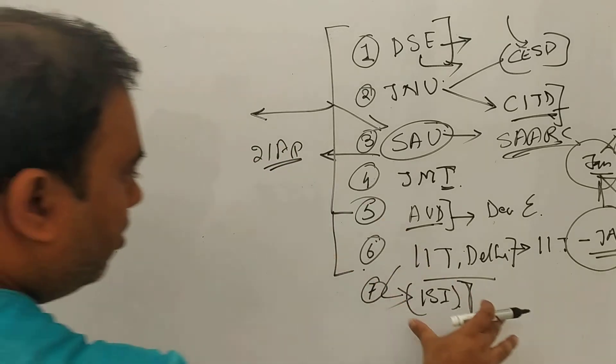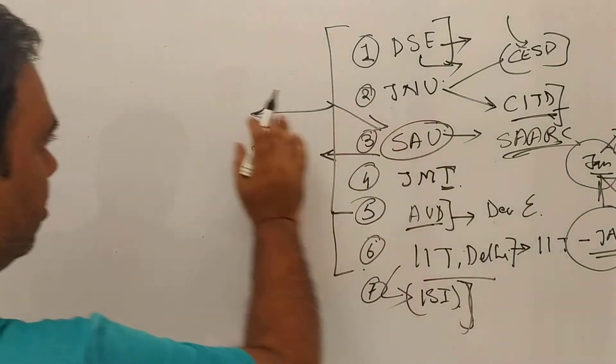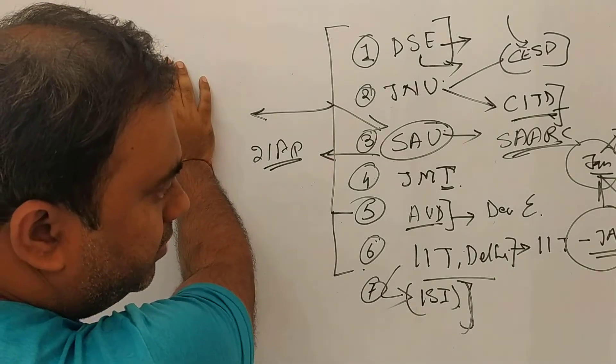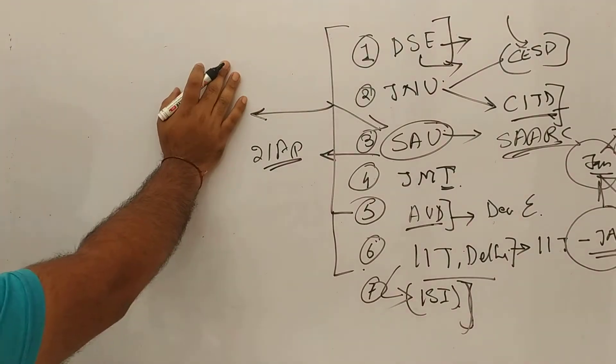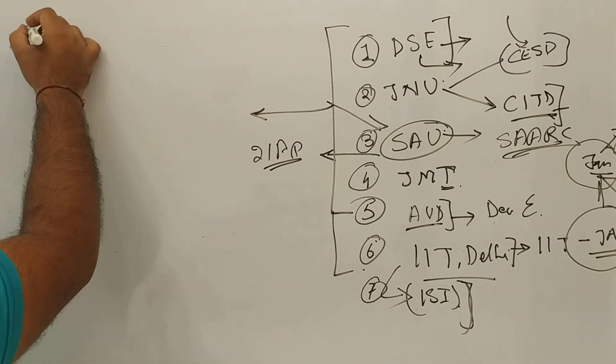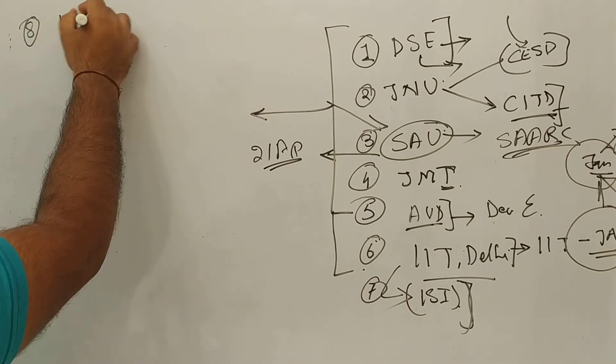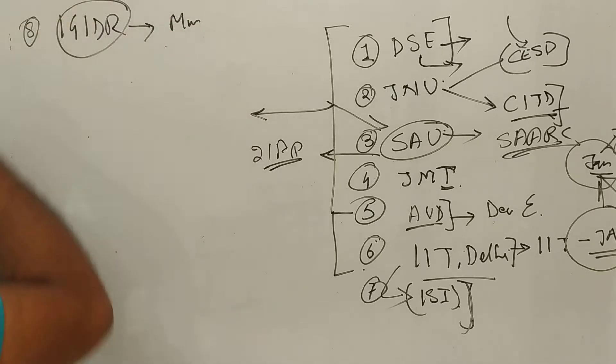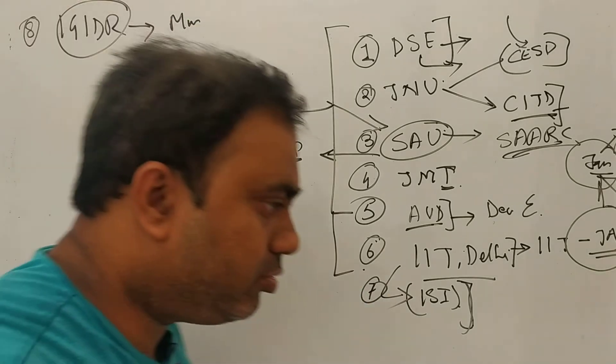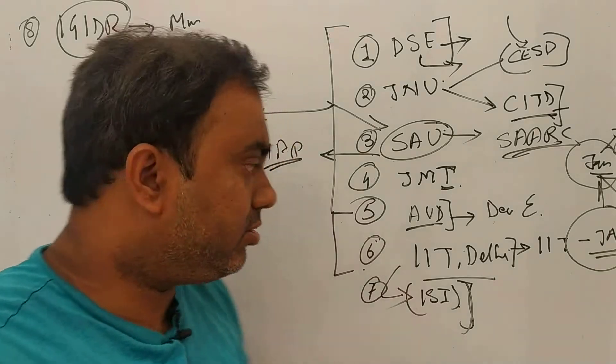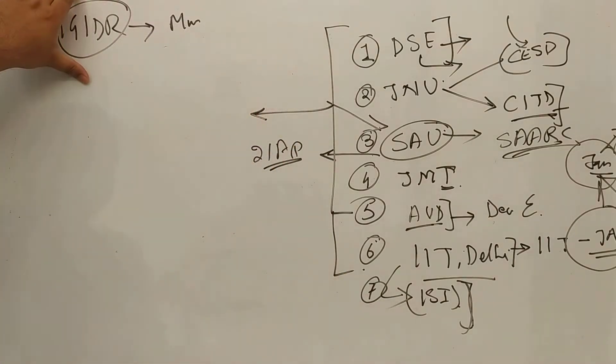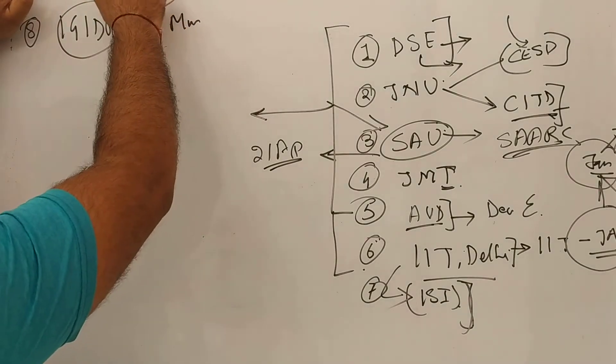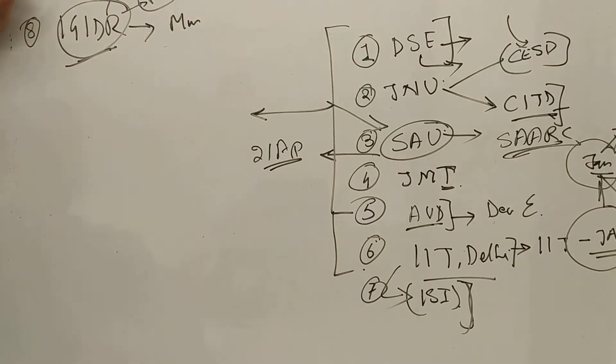After all these institutions which are not based in Delhi, in terms of the entrance examination hierarchy, you can say at the eighth number is IGIDR. IGIDR based in Mumbai. This institution is Indira Gandhi Institute of Development Research, it's run and managed and operated by RBI. I think you will have to appear in an interview for IGIDR also.